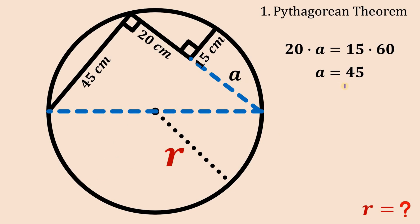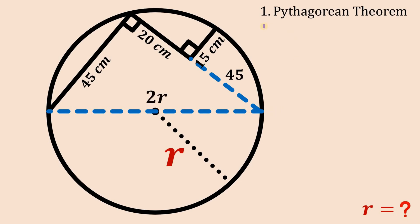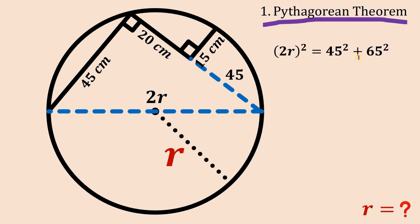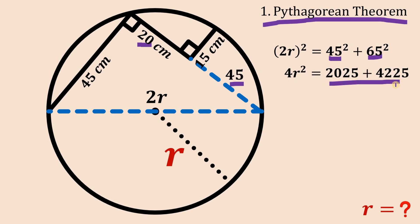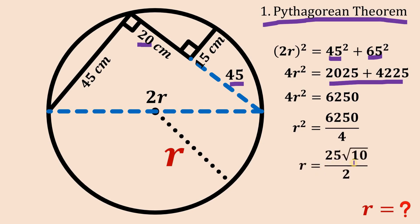Now we know a equals 45 centimeters. Using the Pythagorean theorem in this right triangle: (2r)² equals 45² plus 65² — 65 because 45 plus 20 equals 65. Simplifying: 4r² equals 2025 plus 4225, which is 6250. Dividing both sides by 4 gives r² equals 6250 over 4. Taking the square root of both sides, r equals 25 times the square root of 10 all over 2.